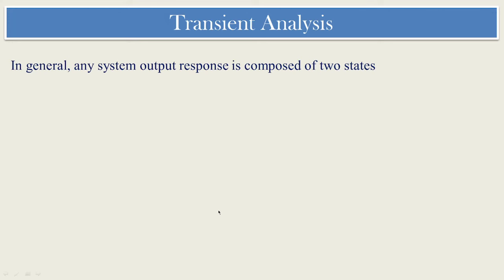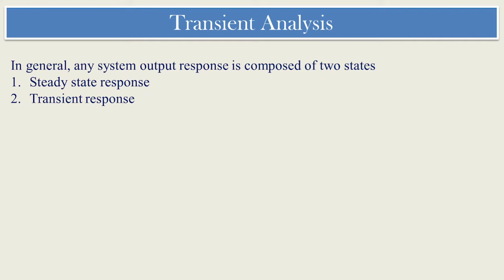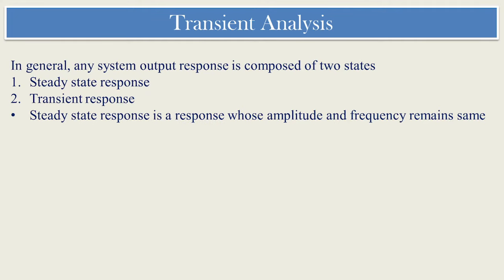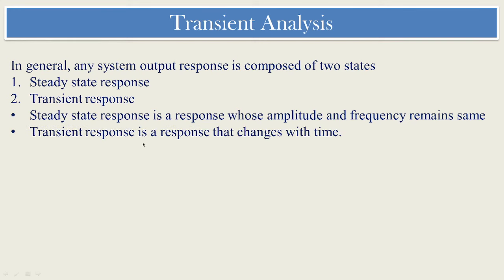In general, in any system the output response is composed of two states: steady state response and transient response. A steady state response is a response whose amplitude and frequency remain the same, whereas a transient response is a response that changes with time. The transient in electrical circuits depends upon the passive elements, especially the energy storing elements.